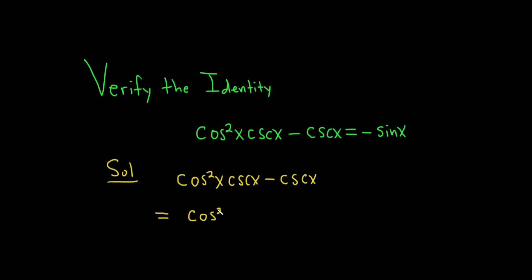So this is cosine squared of x times 1 over sine, minus 1 over sine.